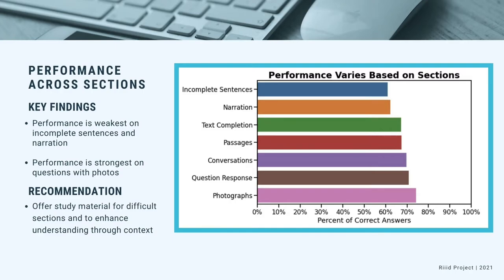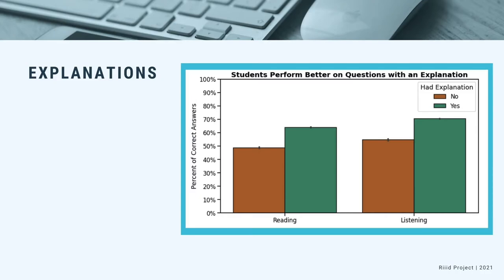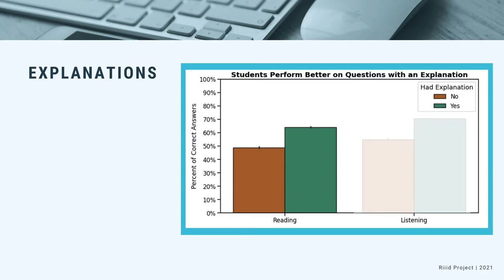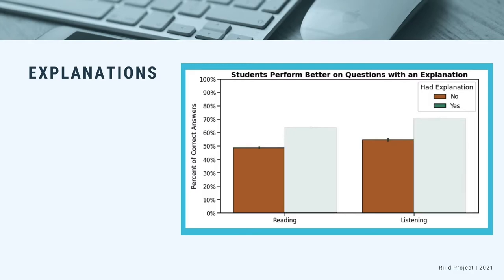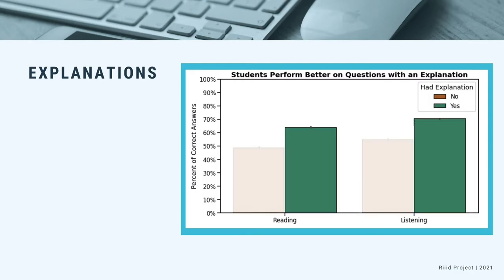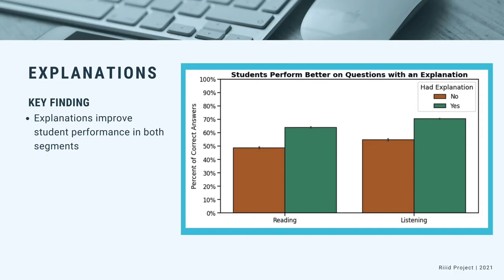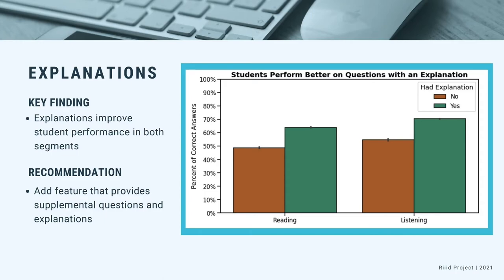Next, let's look at how student performance varies between questions with and without explanations. An explanation tells a student why they got an answer incorrect. The bars on the left half of the graph represent student performance in the reading segment, while the bars on the right represent the listening segment. The orange bars represent questions without an explanation, while the green bars represent questions with an explanation. The graph shows that students perform better when given an explanation, regardless of the subject. We recommend that RID add a new feature where, when a student gets a question wrong, the app also offers the opportunity to view a different question with a similar explanation, providing more exposure to explanations.